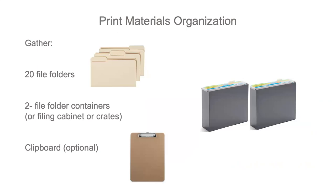Focusing now on the print materials. To organize your print materials, we suggest gathering 20 file folders or folded construction paper folders, and two file folder storage containers of your choice — such as a file cabinet, two smaller containers, crates, or a large box. You'll also want a clipboard or a place to display the materials list by section and staff notes. Additional color file folders may be necessary if you plan on teaching more than one chapter. The color-coded system helps you locate specific materials for each chapter, or you can mark the top of each folder with a different colored marker.